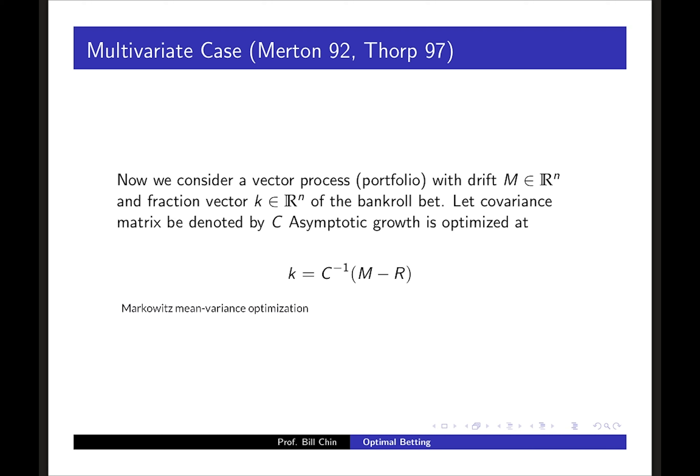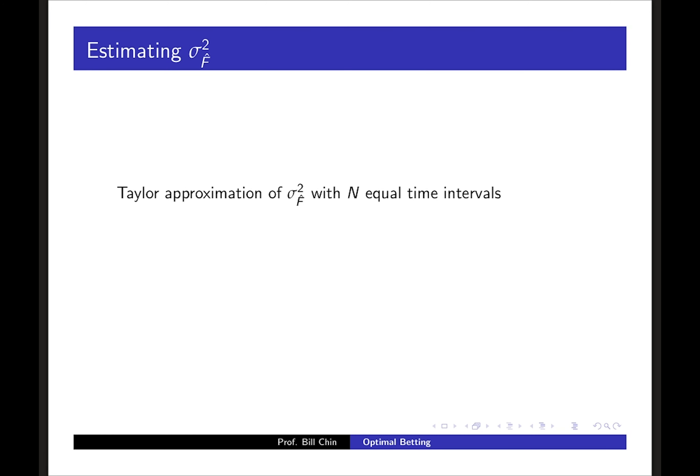What we do now is obtain an estimator for the historical fraction based on data and we get the estimator f̂ which I won't show here, but let me just say that we do get an approximation for the variance of f̂ which we display here. Here v is the variance per unit time and r is the observed rate of return per unit time.